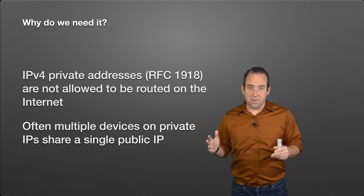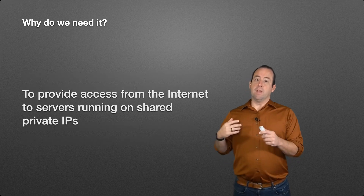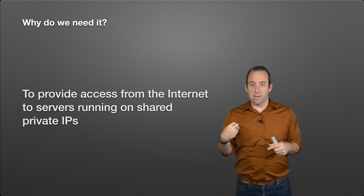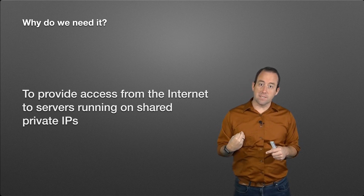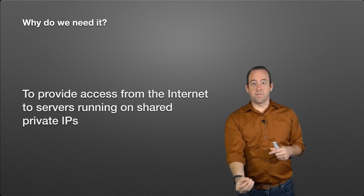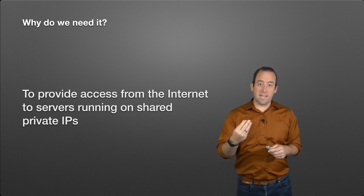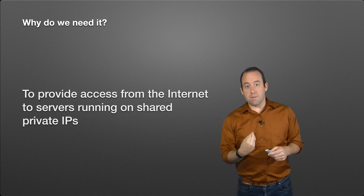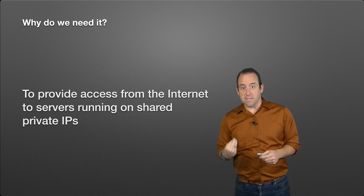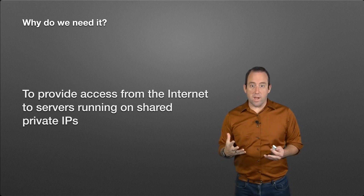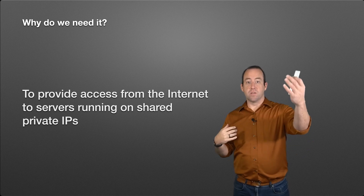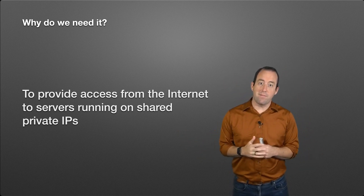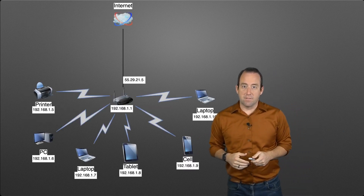The reason we need port forwarding is that if you want to run something inside that network — on those private IP addresses — that is accessible from the internet, you need a way to get traffic from the router to your device, translating between that public address and the private address. Port forwarding is how we set up that translation, moving from a single public IP address to one of the many private IP addresses inside the network.